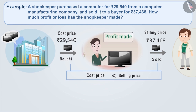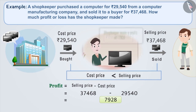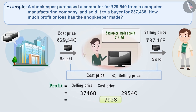Since the selling price is greater than the cost price, the shopkeeper has made a profit. Profit is equal to selling price minus cost price, which is equal to 37,468 minus 29,540, which is equal to Rs. 7,928. The shopkeeper has made a profit of Rs. 7,928.